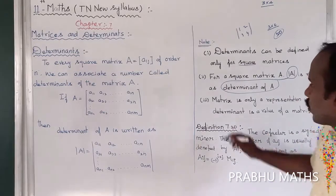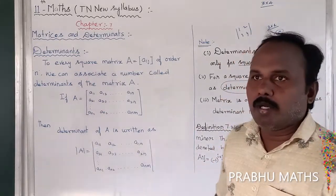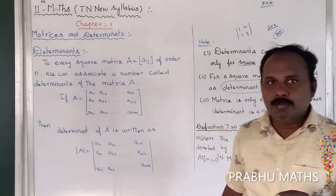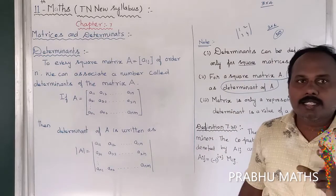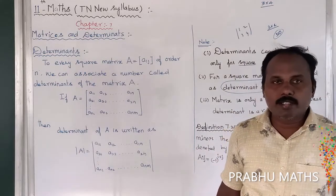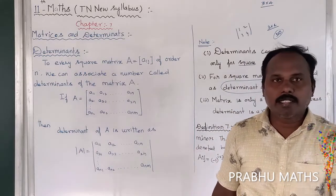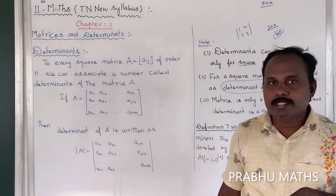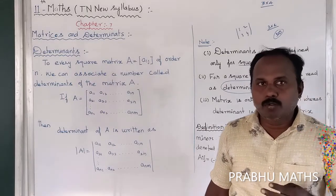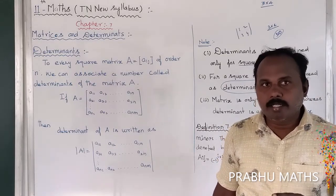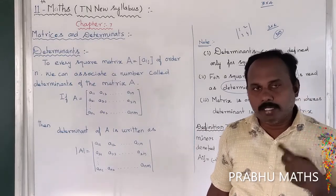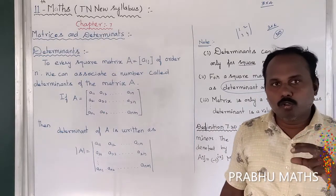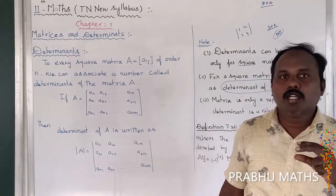The determinant involves an arrangement of elements in a rectangular shape — that is the matrix. The arrangement of elements in a rectangular shape is the matrix. For example, a 1 by 2 or a 3 by 3 square matrix. We convert a square matrix to find the determinant value.